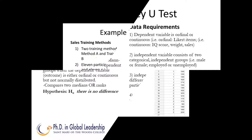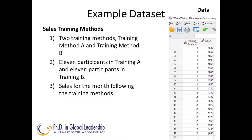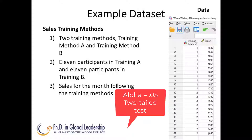The example dataset shows training method A with the monthly sales following the training, and training method B with monthly sales following the training. In the sample, I called them 1 and 2. There are 11 participants in each training method. The null hypothesis: there is no difference in sales results produced by the training methods. The alternative hypothesis: there is a difference in sales results produced by the training methods.